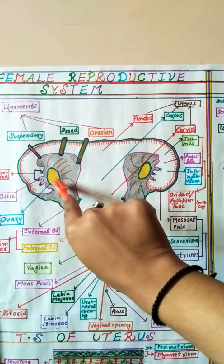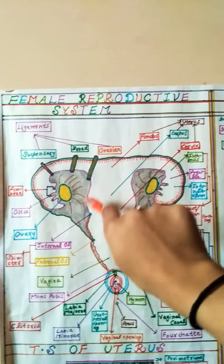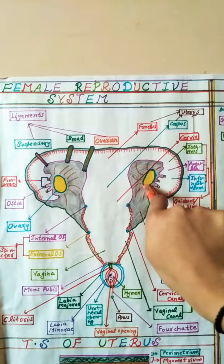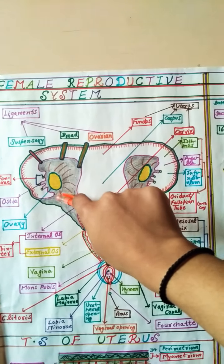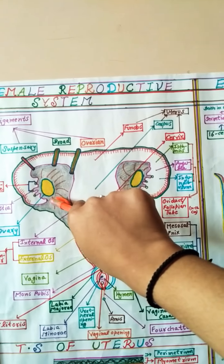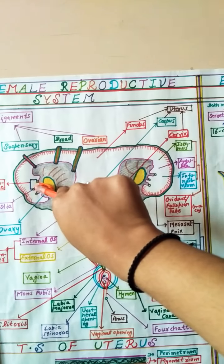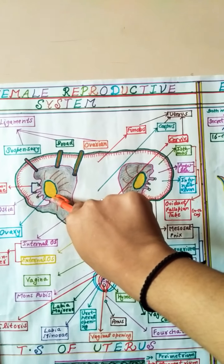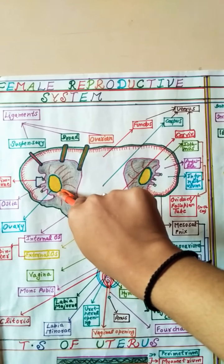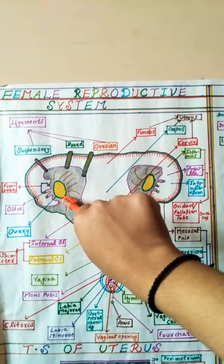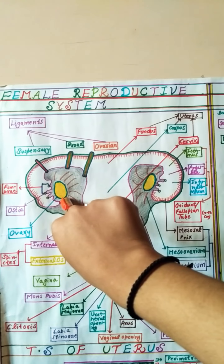The ovaries are paired in number and solid in nature because they are made up externally by the cortical stroma and internally by the medullary region. That is why the ovary is solid in nature.